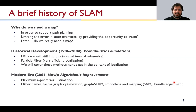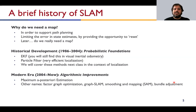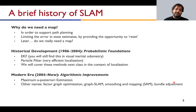A brief history of SLAM: why do we need a map? Having access to a map lets you do predictive or long-term path planning, which you cannot do with a reactive algorithm such as wall following. Additionally, for complex cluttered environments with many features, you can localize better with mapping information — so maps are needed not just for planning but also for low-level localization.